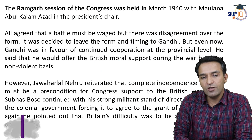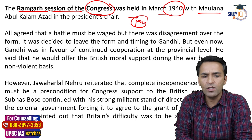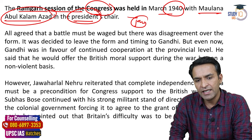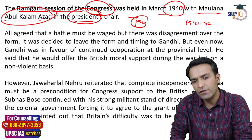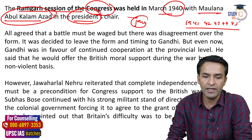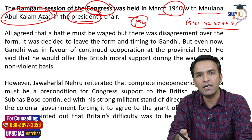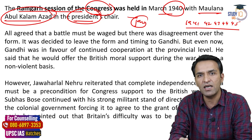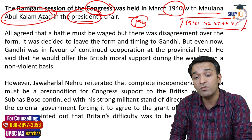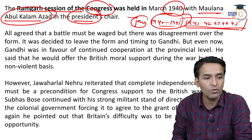When Linlithgow's January statement came, the Ramgarh session of Congress was held in March 1940, where Maulana Abul Kalam Azad was elected as President of Congress. From 1941 to 1945, no Congress annual sessions were held - World War 2 was ongoing and all major leaders were going to jail. Under the Defense of India Act, anyone opposing the war efforts could be arrested. So from 1940 to 1945, Maulana Abul Kalam Azad was the President of Congress.